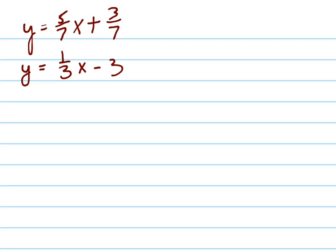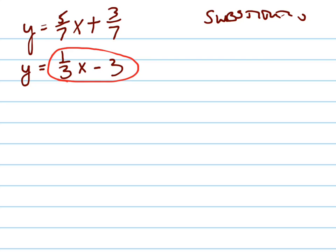Let's solve the system by substitution. Substitution means that I'm going to take one of the variables, one of the equations, and plug it in — solve it for one and plug it in for the other. So it doesn't matter which one you do. In fact, for this, it doesn't really matter because all you're going to be doing is setting them equal to each other.